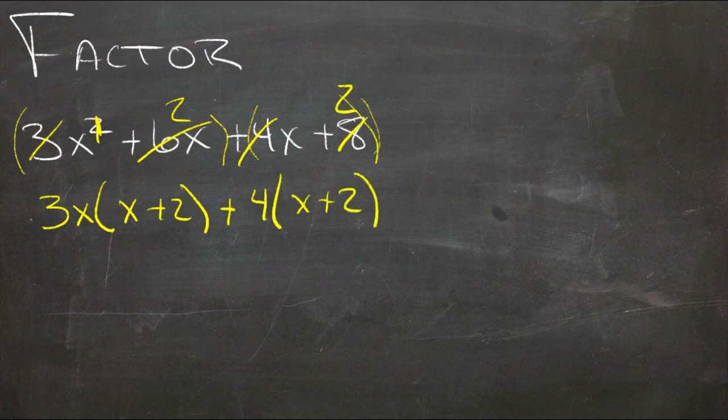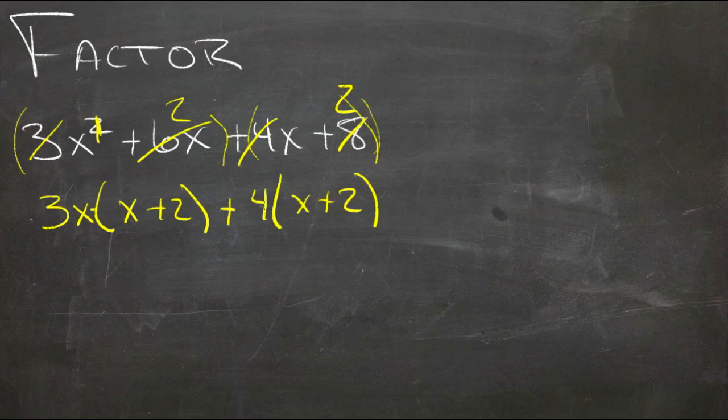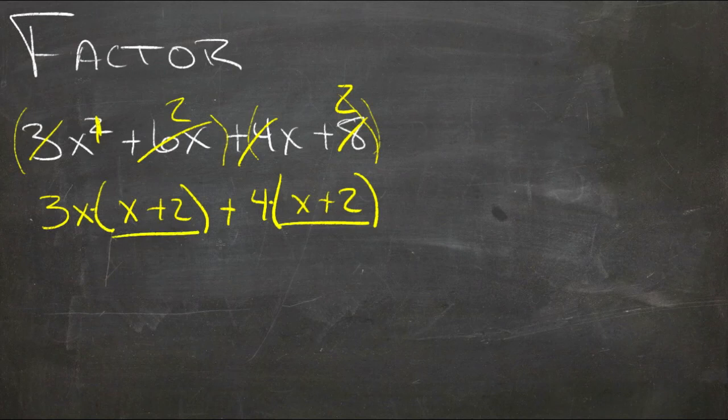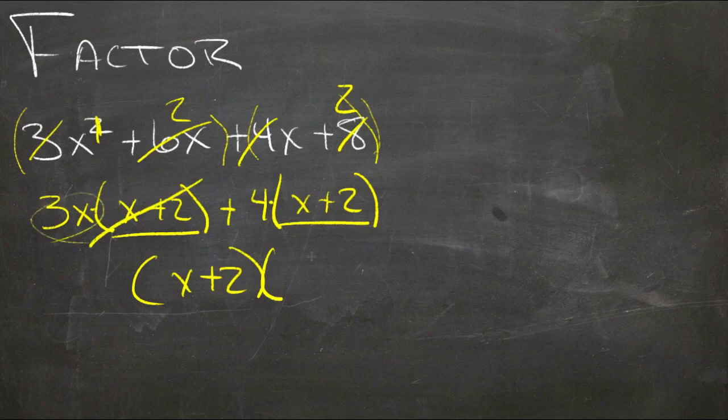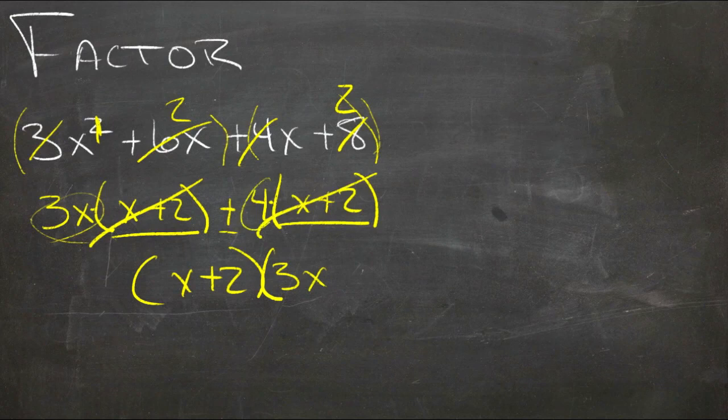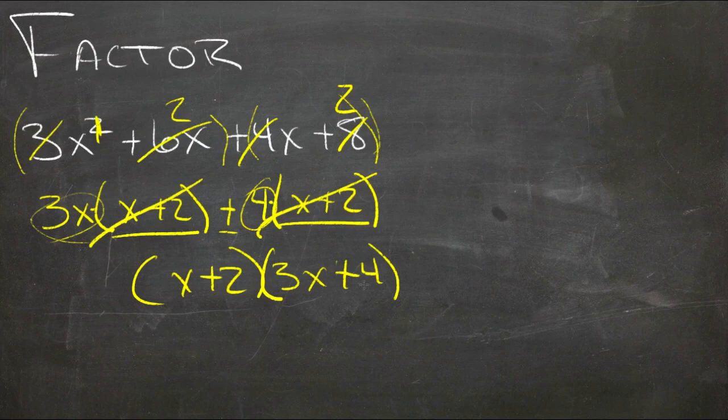And sure enough, now we have 3x times x plus 2 plus 4 times x plus 2, so we can pull that x plus 2 out, and we'll get x plus 2 times 3x plus 4. So that's the factored version of this long rambling polynomial up here on top.